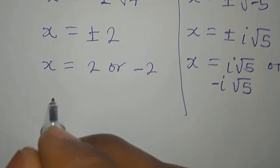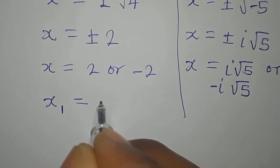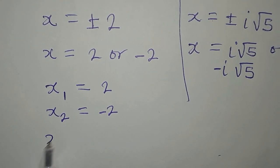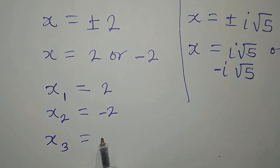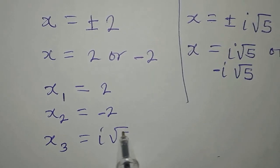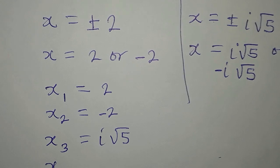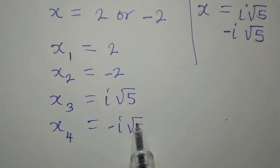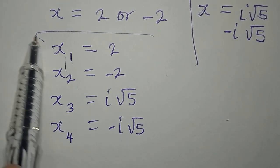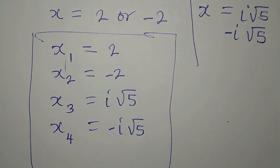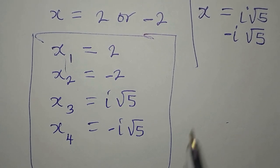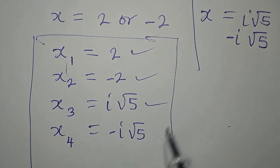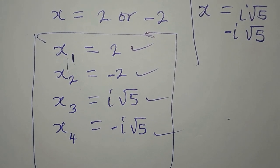Let's bring the four solutions together. x1 equals 2, x2 equals negative 2, x3 equals i root 5, and x4 equals negative i root 5. These are the four solutions. As stated from the start, x1 and x2 are the real solutions, and x3 and x4 are the complex solutions. Thank you for watching.